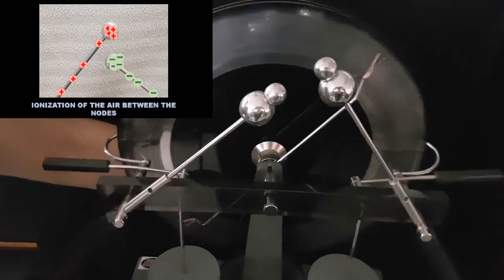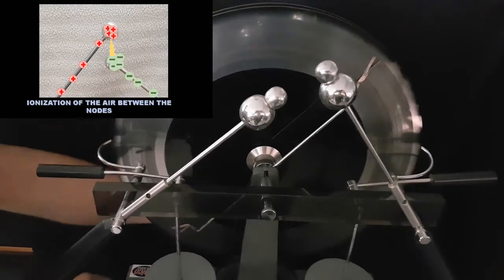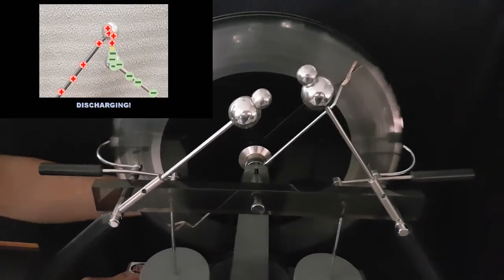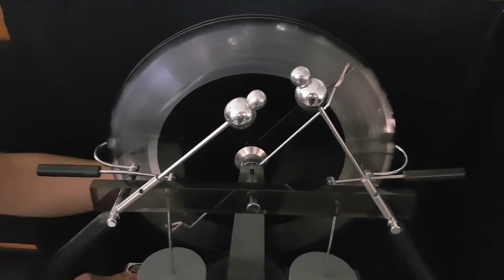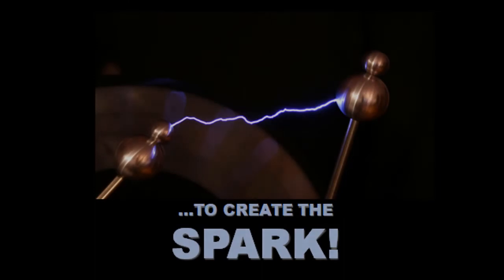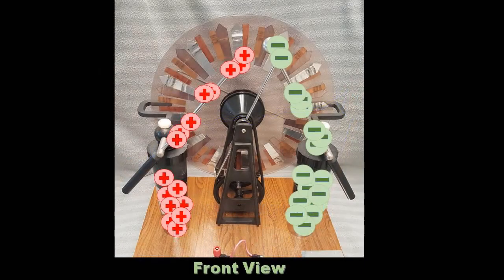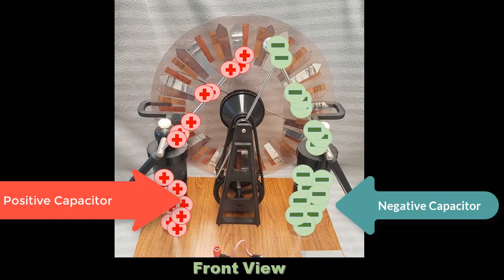As the plates are spun, the cycle continues with more and more charges being induced and being stored into the capacitors until it is discharged in the form of a spark between the two electrodes, one of which is connected to the positive capacitor and the other to the negative.